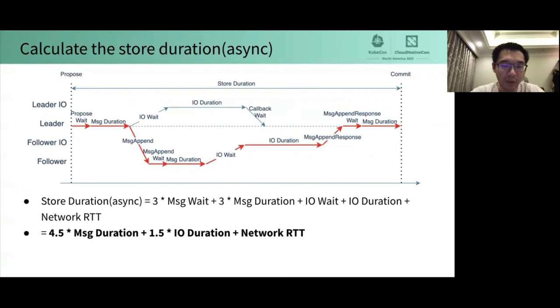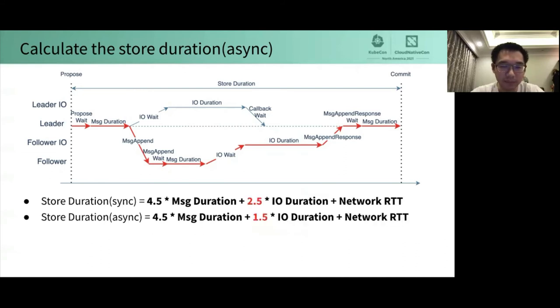After message wait and IO wait are substituted to the previous equations, store duration is equal to the sum of 4.5 message duration, 1.5 IO duration, and 1 network RTT. We compared the two different store duration, and we can find out that the asynchronous version's store duration is one less IO duration than the synchronous version's. Seems perfect, right?